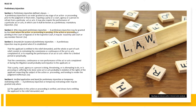Rule 58. Preliminary Injunction. Section 1. Preliminary Injunction Defined, Classes. A preliminary injunction is an order granted at any stage of an action or proceeding prior to the judgment or final order, requiring a party or a court, agency or a person to refrain from a particular act or acts. It may also require the performance of a particular act or acts, in which case it shall be known as a preliminary mandatory injunction.